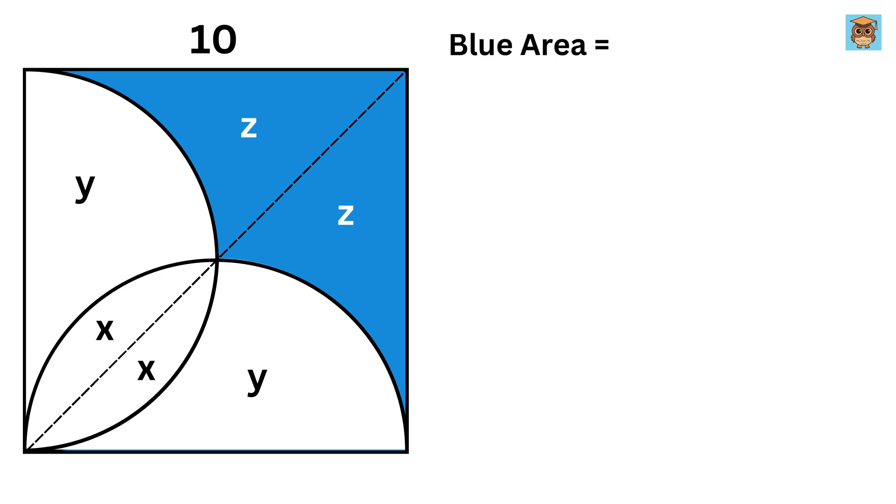So, the total blue area is represented by 2 times z. Since we are dealing with a square whose side length is 10 units, the area of this square will be 10 squared.